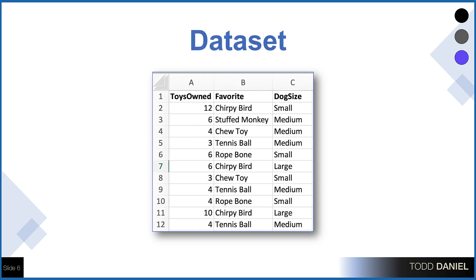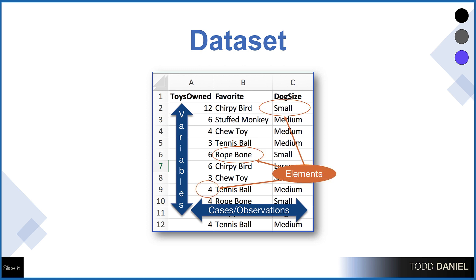We organize our data into a dataset. The dataset is structured in a specific way. Variables go into columns. So in this case, we have three variables: toys owned, favorite toy, dog size. The cases or the observations go into rows. In this case, we have 11 observations. We might also call these subjects or participants. Each cell in the dataset is an element. The number of elements equals the number of variables times the number of observations.